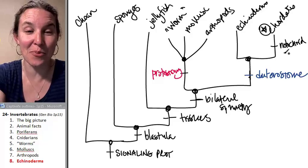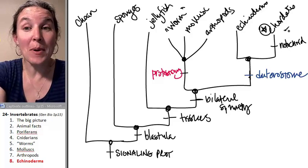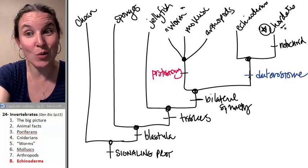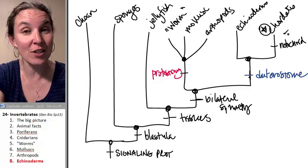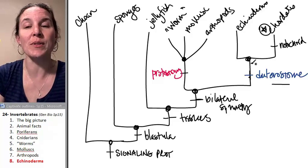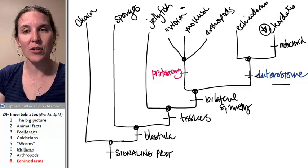So the notochord is the pre-vertebrate structure, but there are invertebrates in the chordates. So not all chordates have a vertebral column, but they all have a notochord and they all are deuterostomes. Echinoderms are deuterostomes that do not have a notochord.